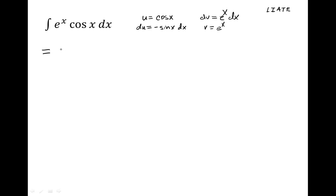Using integration by parts, this gives us u, which is the cosine of x, times v, which is e to the x, minus the integral of v, which is e to the x, times du, which is negative sine x dx. Notice we didn't get too far with this — we started with e to the x and a trig function, and we've ended up with another integral of e to the x with a trig function. Also notice we have a double negative here: the negative integral and the negative sine, which will turn into a plus.